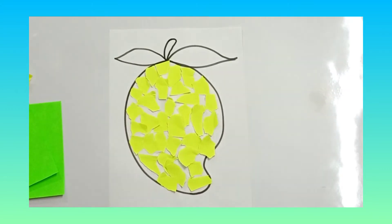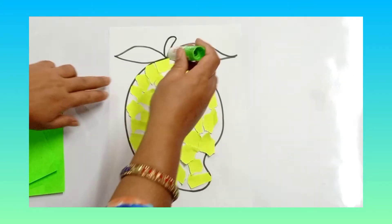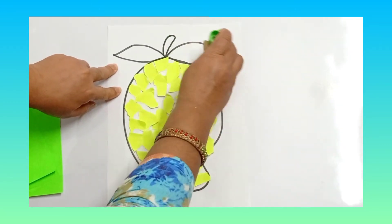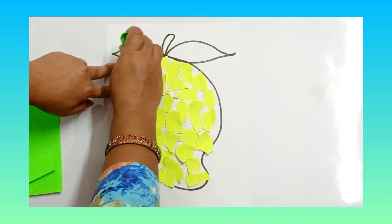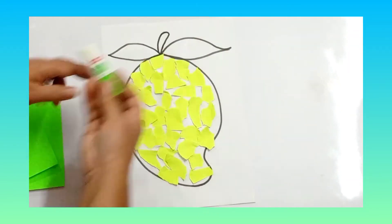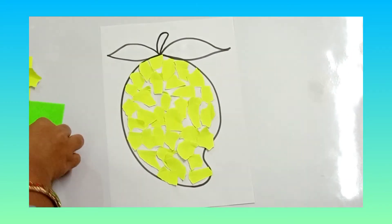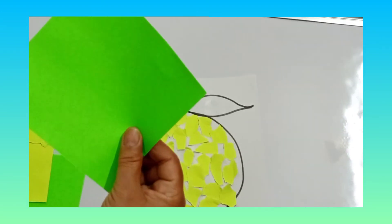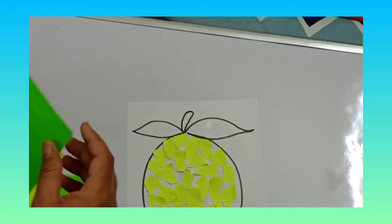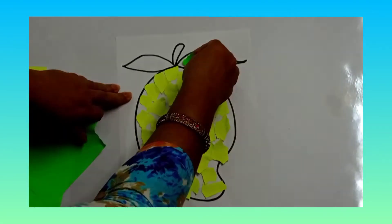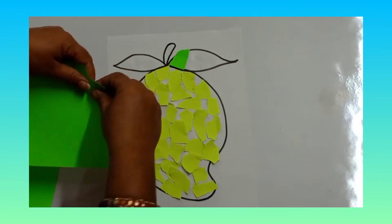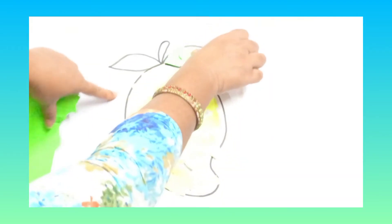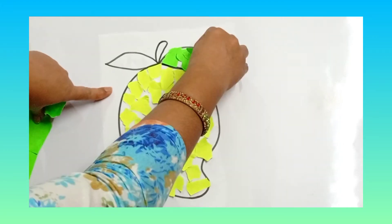Now what is the color of leaves? First of all we will apply glue within these lines. And then we will take green piece of paper because color of leaf is green. Then we will start tearing paper, green color paper, and we will paste within these lines.